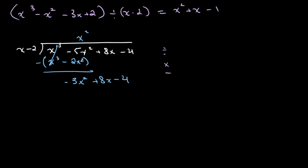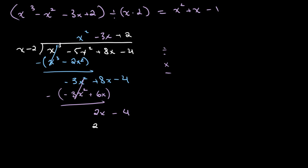Now we divide minus 3x squared by x, which gives us minus 3x. We multiply minus 3x by x minus 2, giving us minus 3x squared plus 6x. We subtract — those terms cancel — and we get 2x minus 4. Then we divide 2x by x to get 2, so plus 2 in our answer. We multiply 2 by x minus 2 to get 2x minus 4, subtract, and get a remainder of 0. This is our final answer.